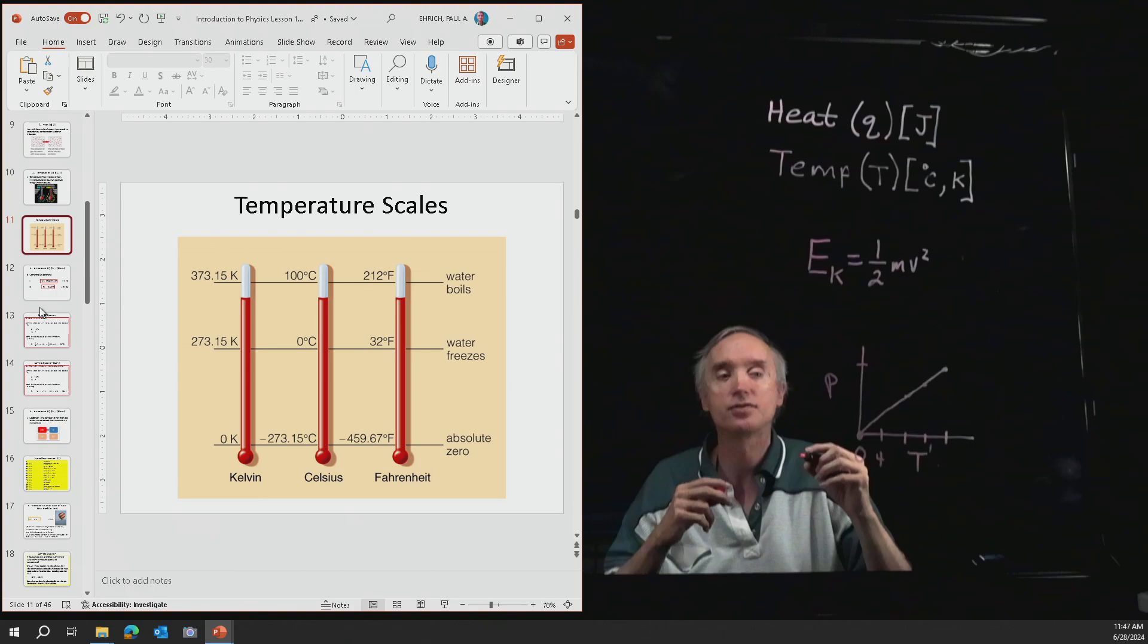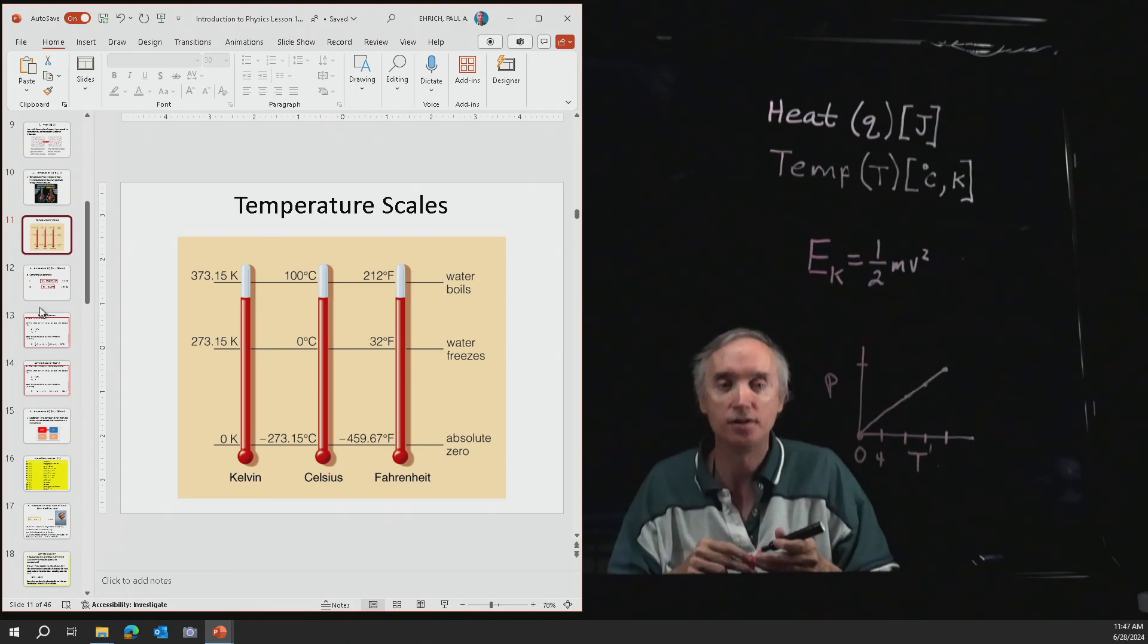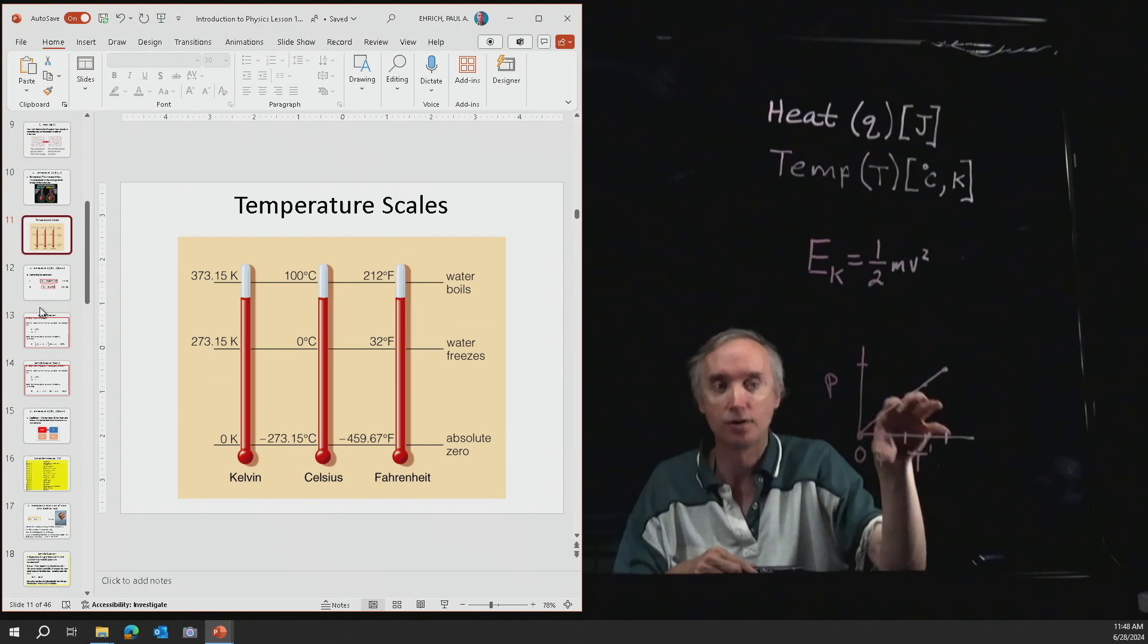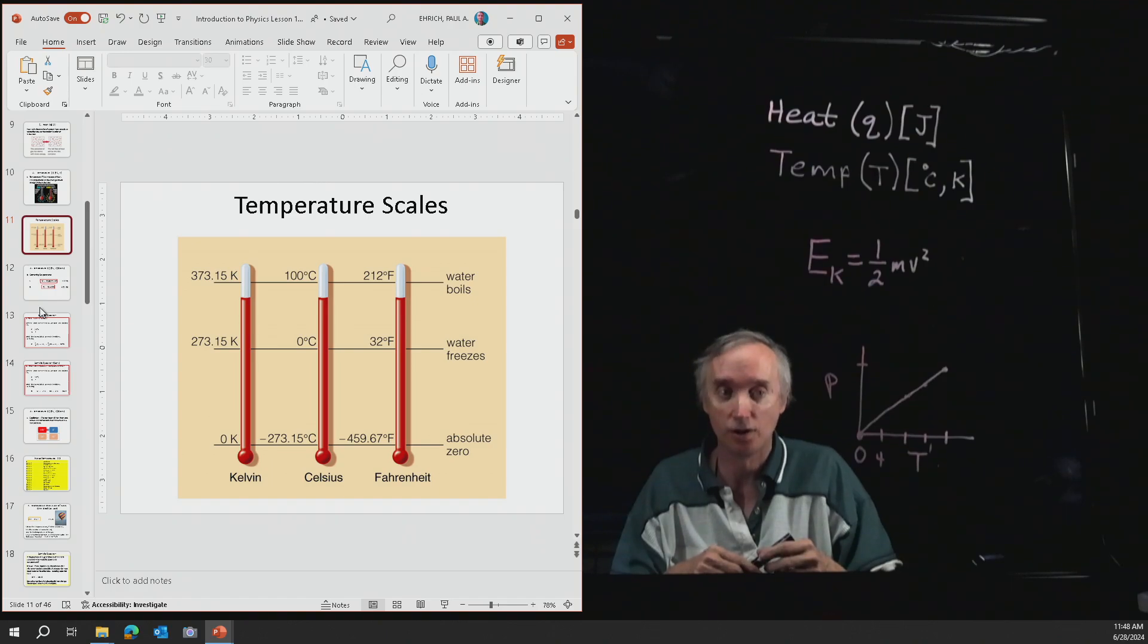At absolute 0, molecular motion would cease, because we said that temperature is a measurement of the kinetic energy of the molecules. So if the temperature goes down, the kinetic energy of the molecules goes down, which means they're going slower and slower and slower. So at absolute 0, molecules would stop moving.